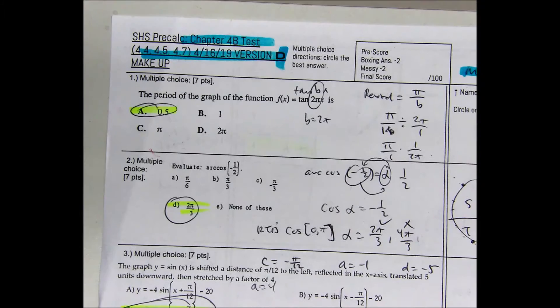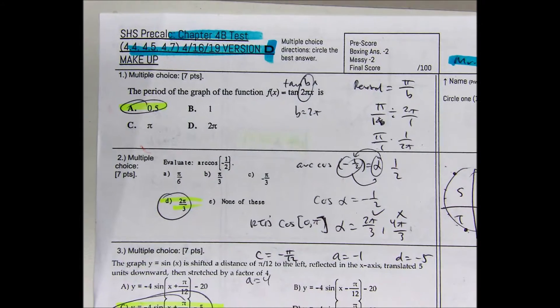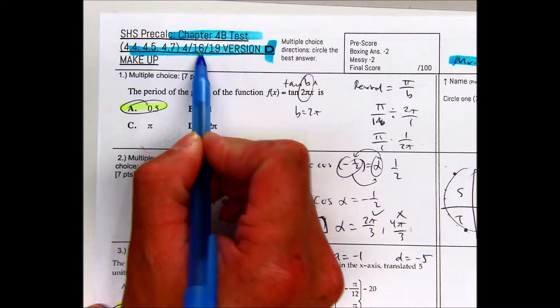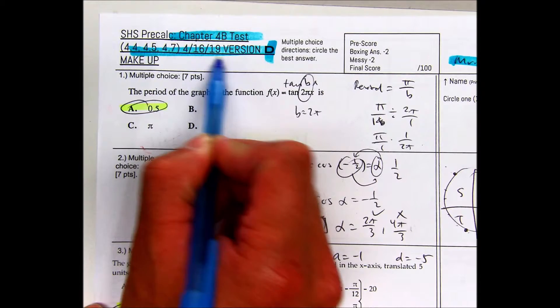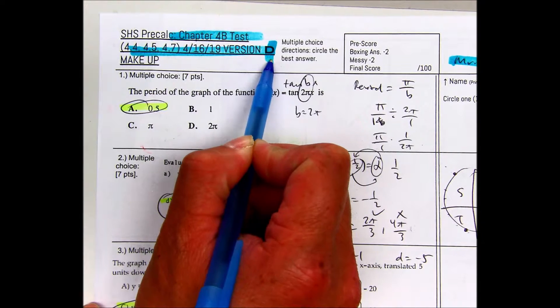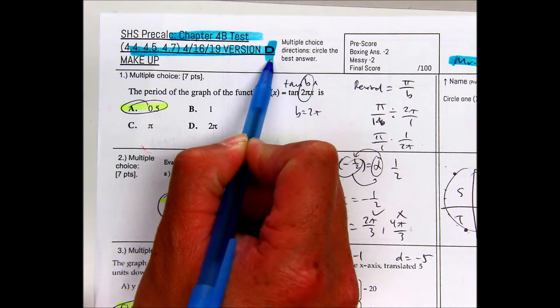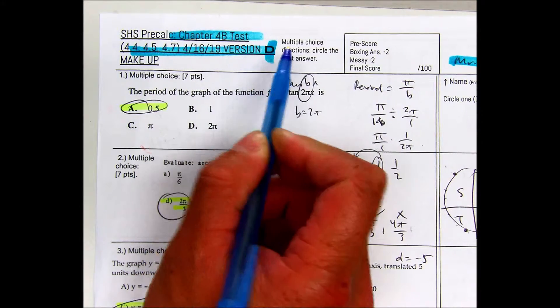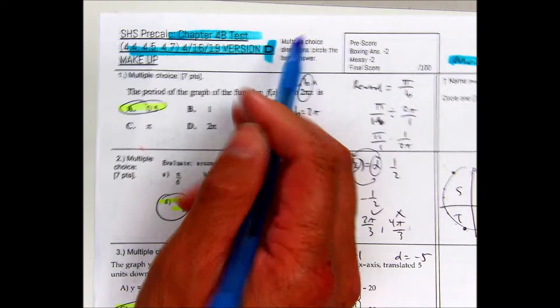This is Mr. Ng going over the Chapter 4b test, taken April 16th, 2019. This is Version D. This was the students who had taken it after the first week or something like that.